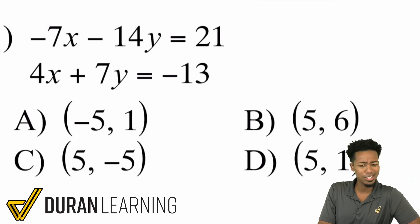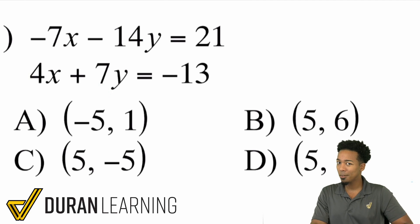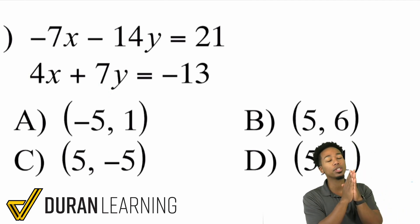I'm looking at this and I'm seeing that we have a 7 on the x here and a 4 there, 14 on the y and a 7 on the y here. How are we supposed to eliminate? Well, here's the thing, my party people.